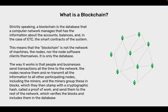What is a blockchain? Strictly speaking, a blockchain is the database that a computer network manages that has the information about the accounts, balances, and, in the case of ETC, the smart contracts of the system. This means that the blockchain is not the network of machines, the nodes, nor the node software clients themselves. It is only the database.